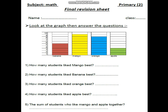Look at the graph then answer the questions. Before we answer the questions, we will write the numbers under the graph. Banana — count and write. They are 5.